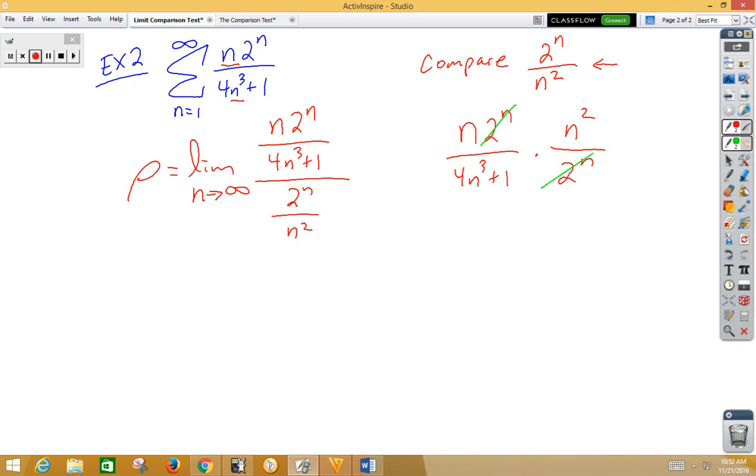So now we've got rho is the limit as n approaches infinity. On the top now, we have an n cubed. On the bottom, we have a 4n cubed plus 1. Again, we have a same over same, which gives us 1 fourth. 1 fourth is greater than 0, so they're both going to behave the same way.